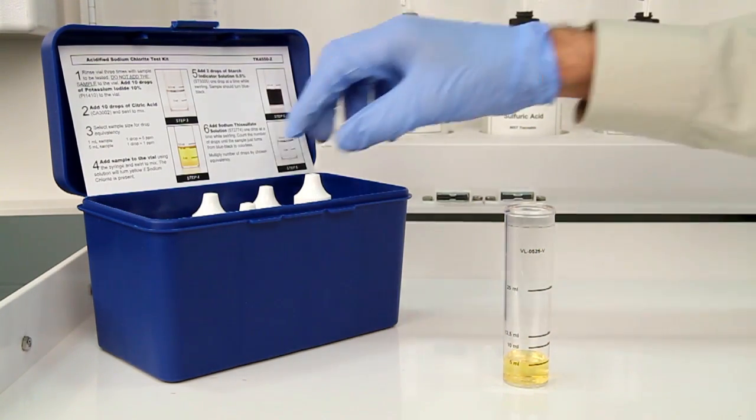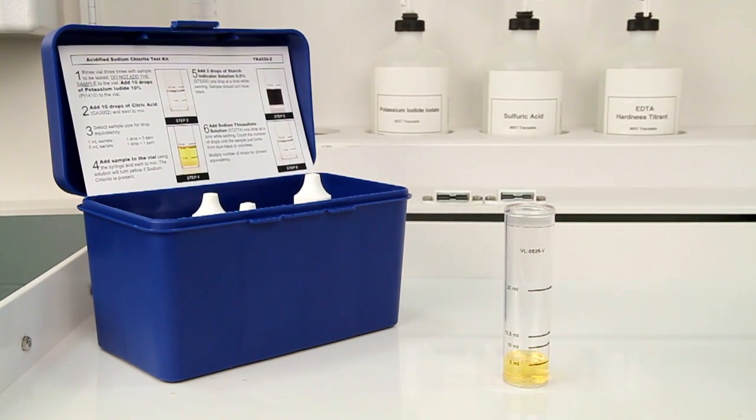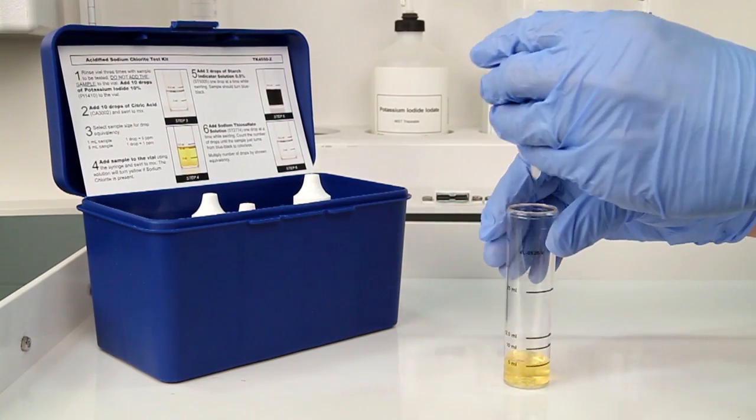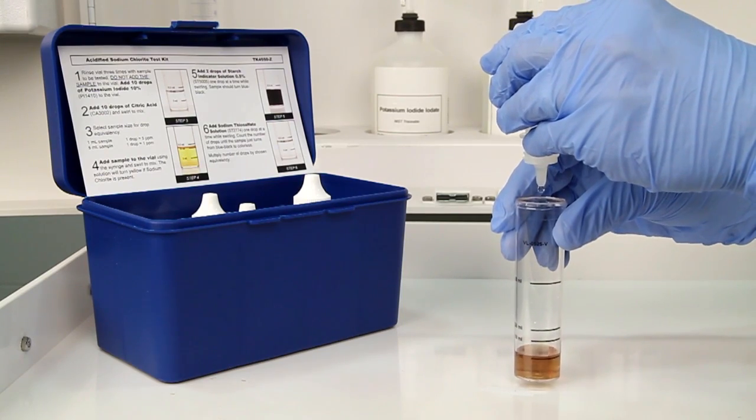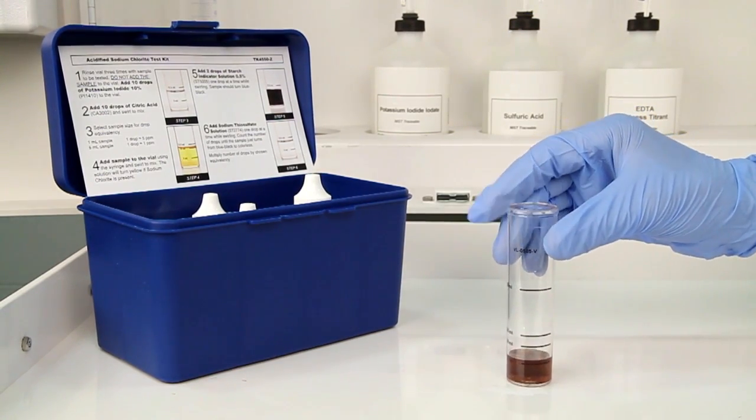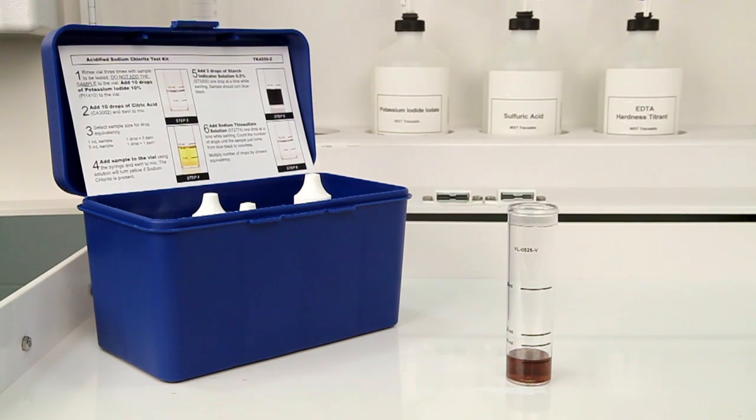The next step is to add 2 drops of starch indicator solution 0.5%. The bottle contains a dropper tip, so it's important to hold the bottle vertically to get a consistent drop size. After the addition of each reagent, swirl the vial to make sure the reagents are properly mixed. The sample should turn a blue-black color.